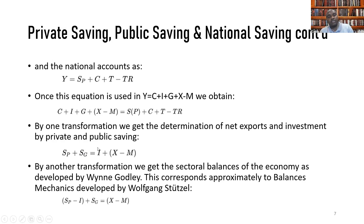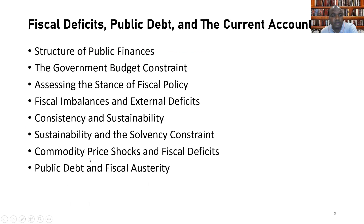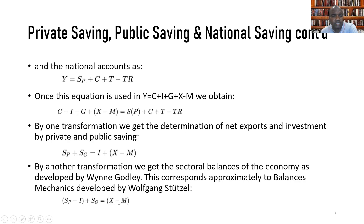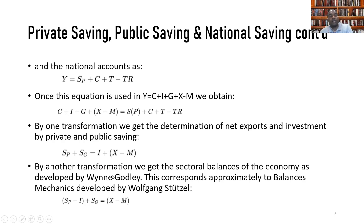National saving equals private saving plus government saving, which collectively equals investment plus net exports. By another transformation, making net exports the subject, we get private saving minus investment plus government saving equals net exports. This corresponds to the balance mechanics as developed by Wolfgang Stützel, and this exposition is based on the seminal work on sectoral balances.